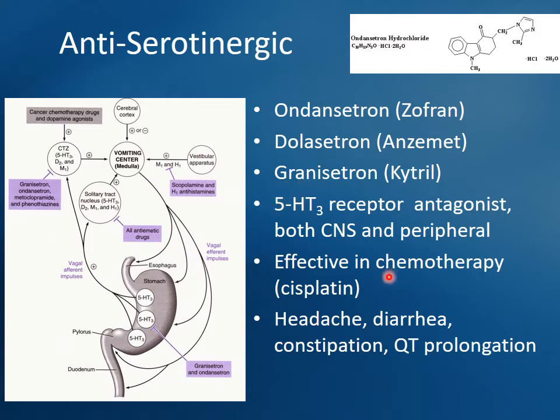These agents are very effective for chemotherapy-induced nausea and vomiting — a cornerstone of therapy for those patients. Cisplatin is one chemotherapy agent that's particularly nasty for causing significant nausea and vomiting. These drugs are very well tolerated with not many side effects, but the big thing to watch out for is QT prolongation. It's dose-dependent and becomes an issue when other drugs on board are also prolonging QT. As a single drug by itself it's not a big deal, but in chemo patients on multiple immunosuppressives, adding this could be the straw that breaks the camel's back. Check an EKG if concerned.